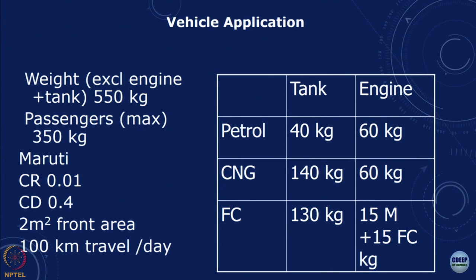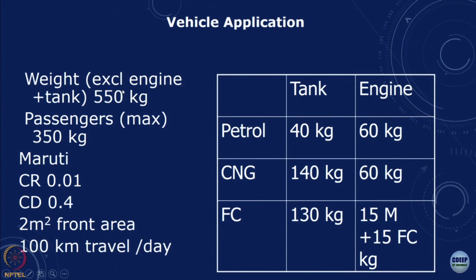To compare on a common basis, we calculate power requirements based on vehicle weight. The empty body (excluding engine and tank) is 550 kg, plus 350 kg for passengers = 900 kg total. We use the coefficient of drag, coefficient of rolling resistance, frontal area, and assume 100 km of travel per day. Based on driving range before refuelling, we determine tank capacity.